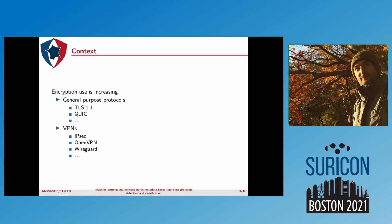The context of this work is that encryption use is increasing. We have general purpose protocols for encryption such as TLS 1.3 and QUIC — using these two protocols you can, for example, encrypt HTTP data to obtain HTTPS or HTTP3. Then you have VPN protocols such as IPsec, OpenVPN, or WireGuard that you can use to encrypt data, and this means that you can encrypt several applications through the same tunnel.